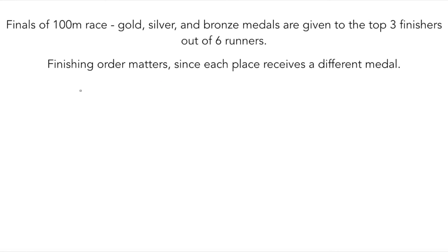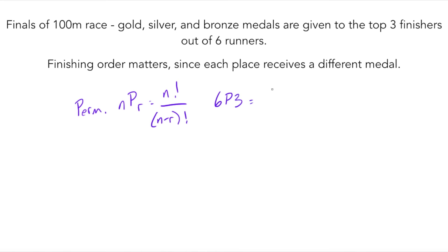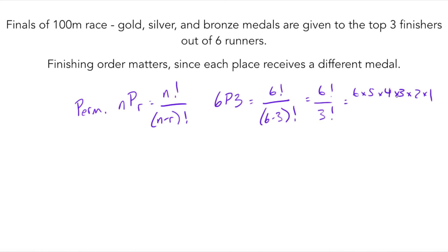On to the finals question. Here we're giving out medals to the top three finishers, so we know it's a permutations problem since the order matters. nPr equals n factorial over n minus r factorial. We have 6 runners in the pool, so 6P3 translates to 6 factorial over 6 minus 3 factorial, which becomes 6 factorial over 3 factorial. We can reduce and remove the 3 times 2 times 1, leaving 6 times 5 times 4, which is 120. That's your answer.